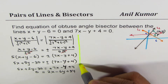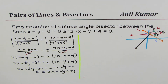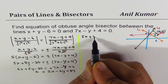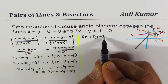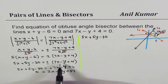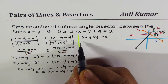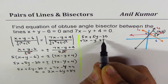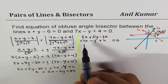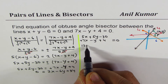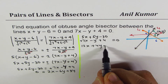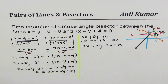For the second equation, we use the negative sign: 5x plus 5y minus 30 plus 7x minus y plus 4 equals 0. Adding the like terms: 5 plus 7 gives 12x, and combining the y terms gives plus 4y, and the constants give minus 26, so: 12x plus 4y minus 26 equals 0.